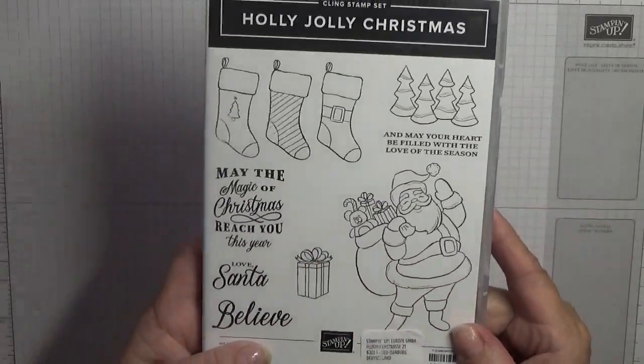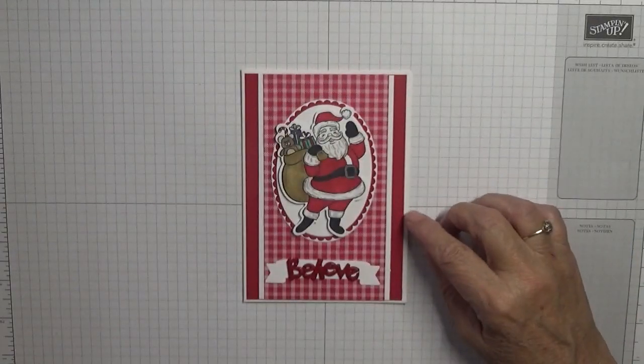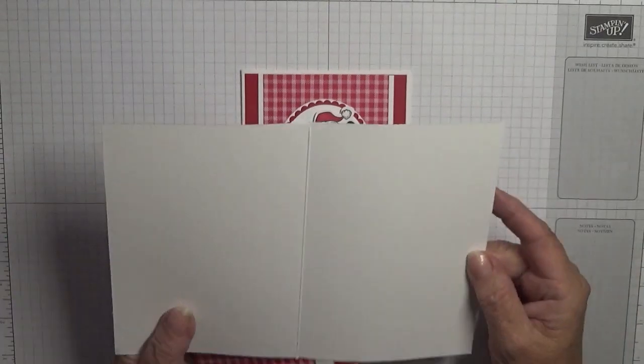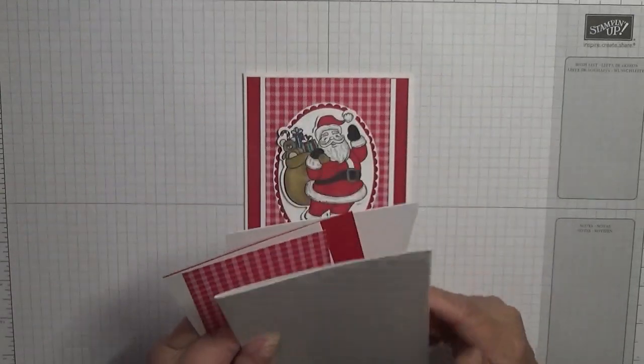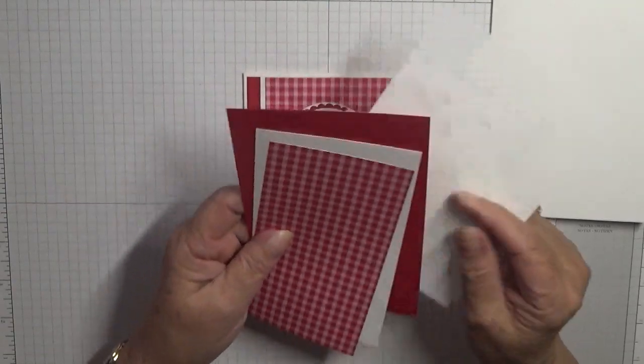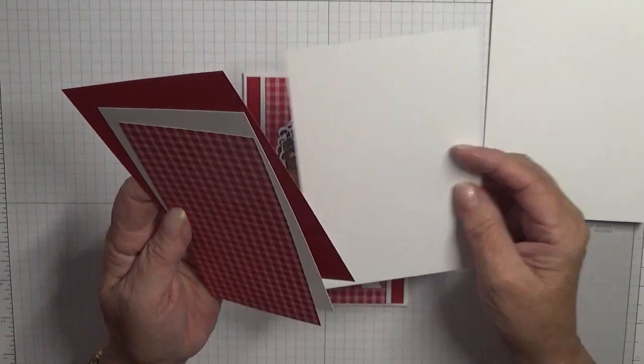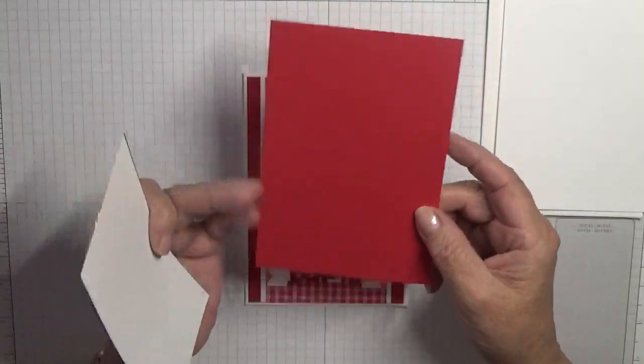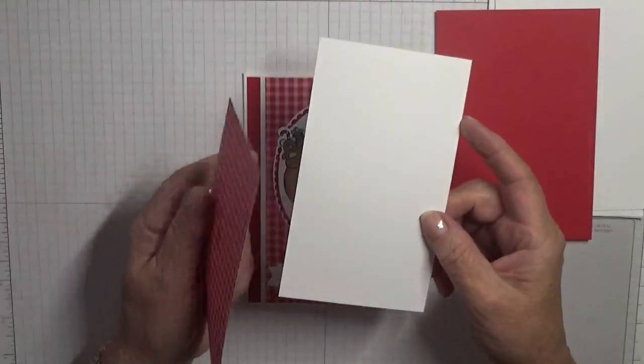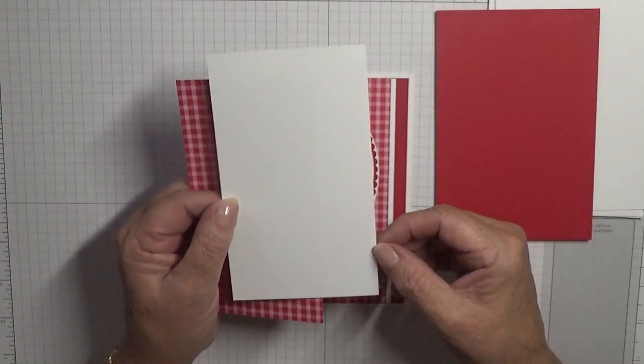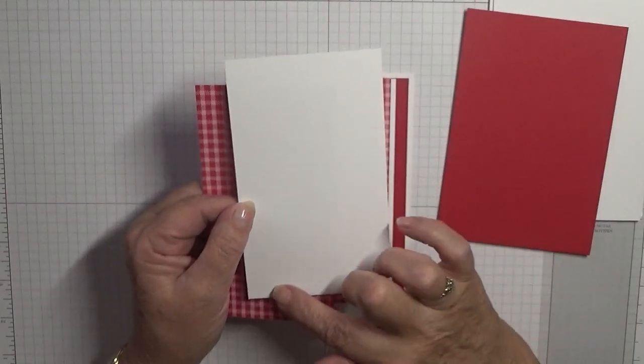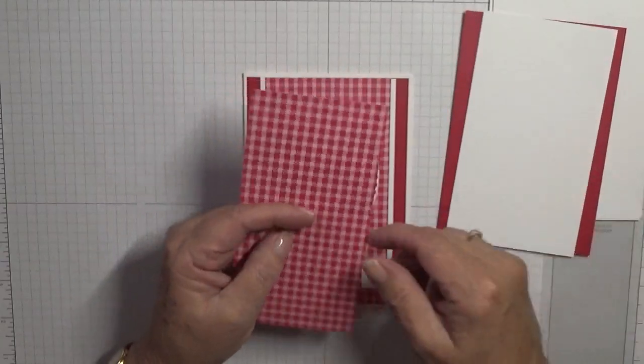To make this card you will need a card base of eight and a quarter by five and seven-eighths, scored at four and one-eighth and folded in half. A piece of white cardstock at five and five-eighths by three and seven-eighths for the inside. A piece of real red cardstock at five and five-eighths by three and seven-eighths. A piece of white cardstock at five and five-eighths by three and a quarter.